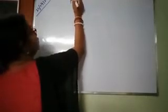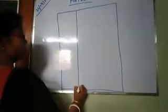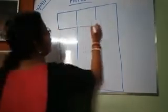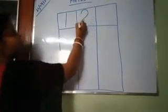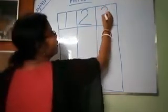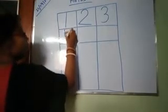Now I will write. I will write small because my board is not so big. This is number 1 — standing line. Number 2: backward curve, forward slanting line, slipping line. Number 3: 2 backward curves. Number 4.